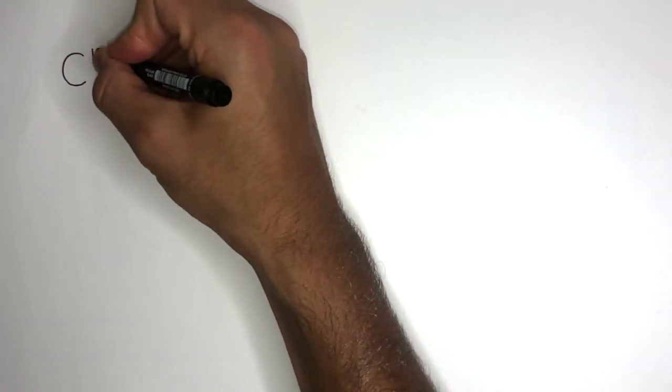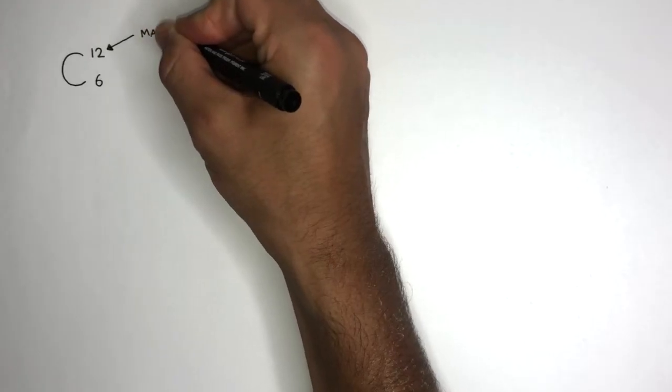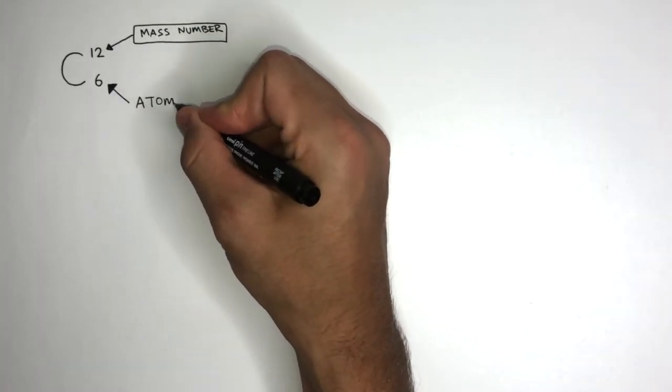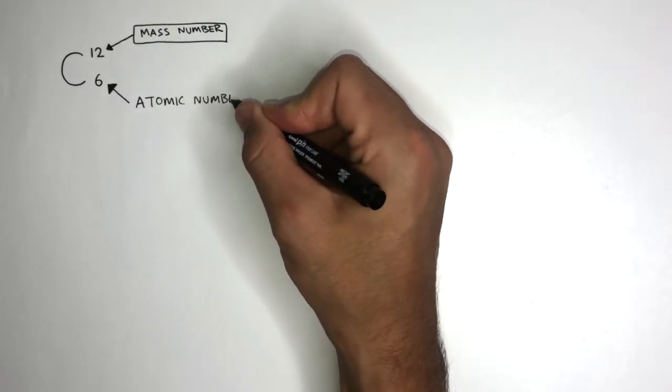Every element in the periodic table will always have two numbers associated with it. The big number is known as the mass number, and the small number is known as the atomic number, sometimes called the proton number.